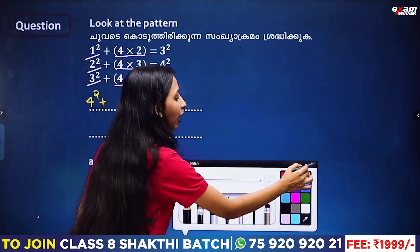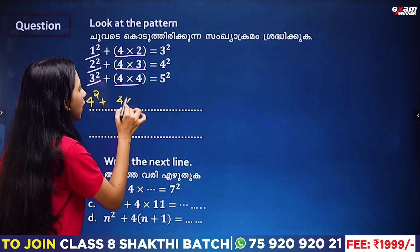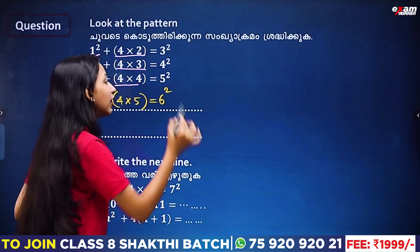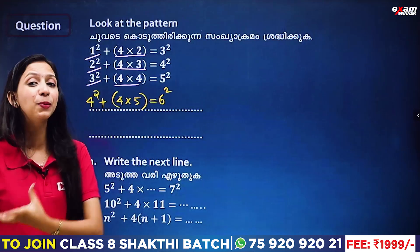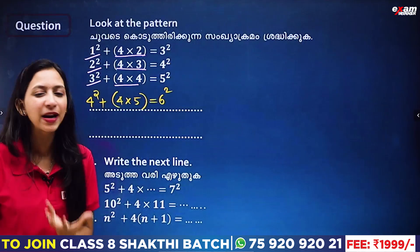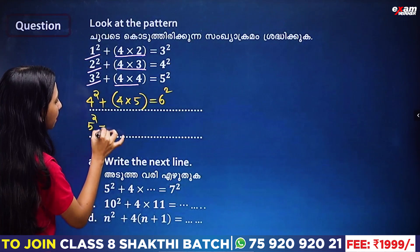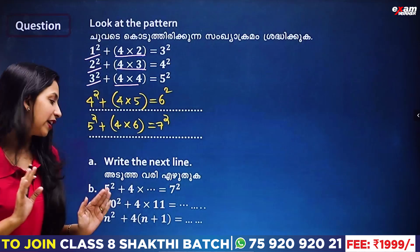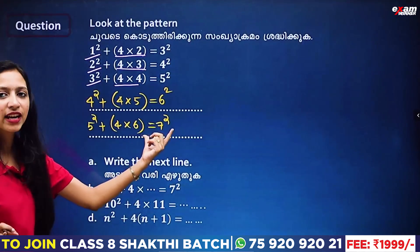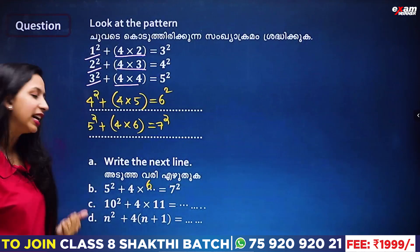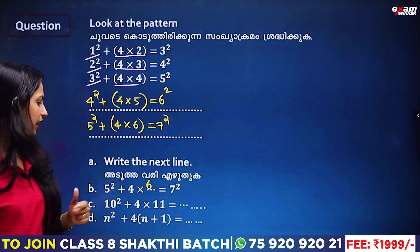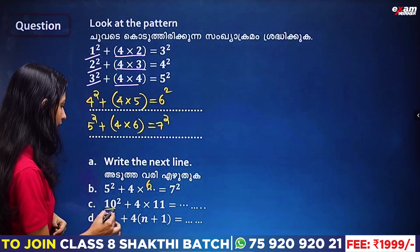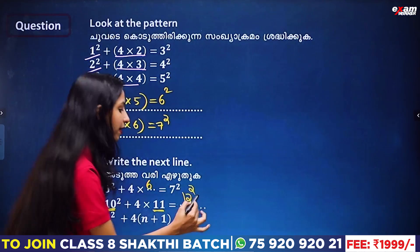If we have a chapter of identities, we can learn how easy it is. For example, 5 squared plus 4 into 5 equals 7 squared. Also, 5 squared plus 4 into 7, and 10 squared plus 4 into 11. This is 10, this is 11, this is 12. You can follow a pattern here.